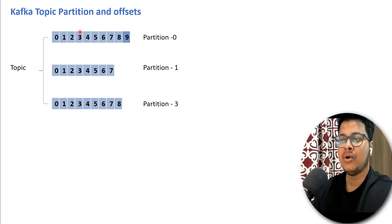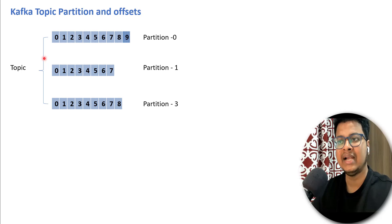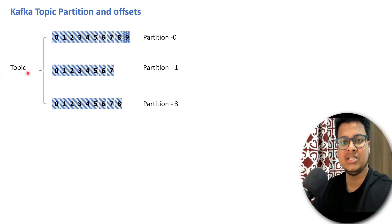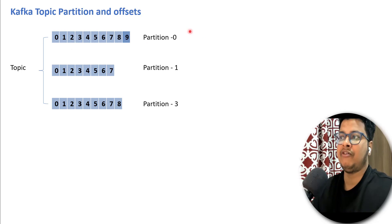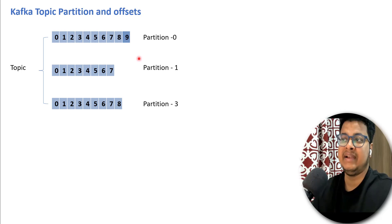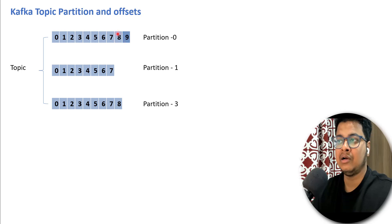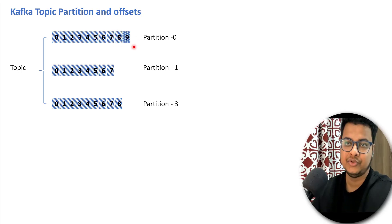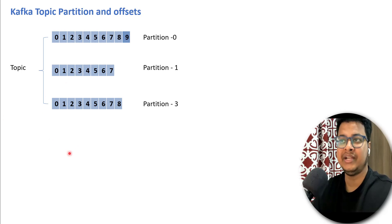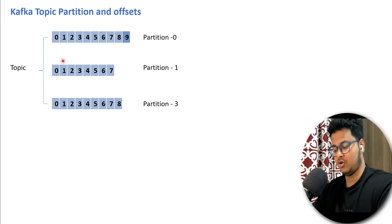Why is the offset required? Suppose you want to identify any particular message — you'll first find that your data is coming into a specific topic, then identify the partition number. So you find out your message is stored in partition zero, and the address will be the offset. If you go to topic zero, partition zero, and index offset eight, you'll get your message. This is how the internals work in terms of topic, partition, and offsets.